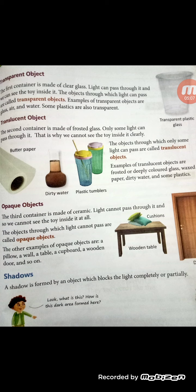So objects are of three kinds on the basis of how light passes through them: transparent objects, translucent objects, and opaque objects.